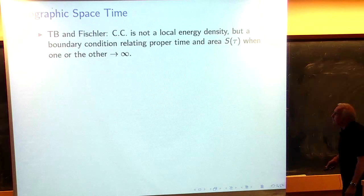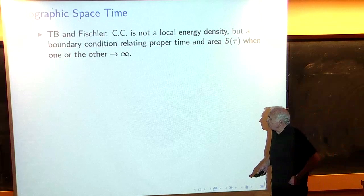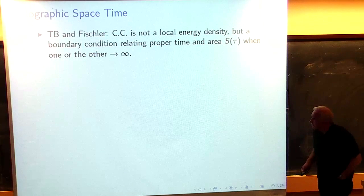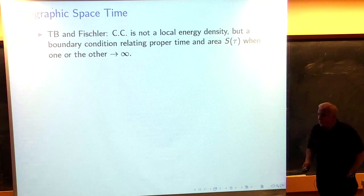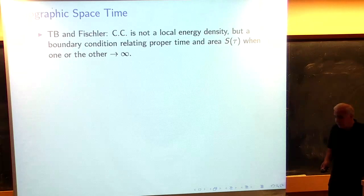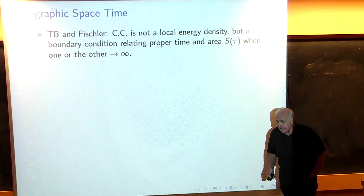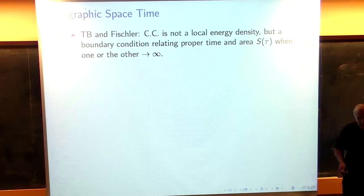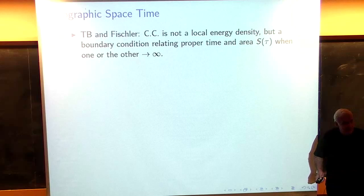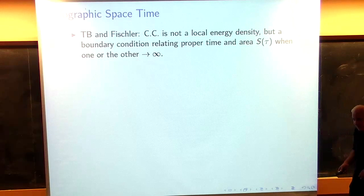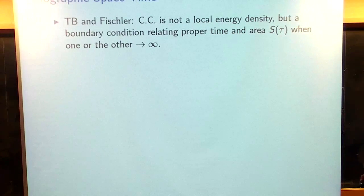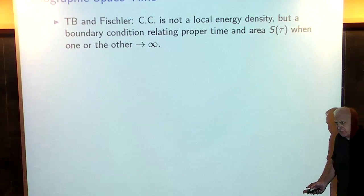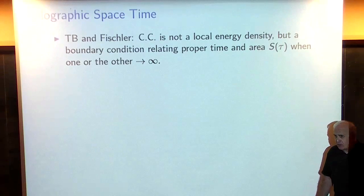The theory of holographic space-time started off with papers that Willie Fischler and I wrote separately, trying to understand what the cosmological constant was. The way to say that properly is that you can think of the cosmological constant in this context not as something that contributes to local hydrodynamics — that's precisely what Jacobson's derivation shows is not true — but as something that is a boundary condition on hydrodynamics in the limit of very large causal diamonds.